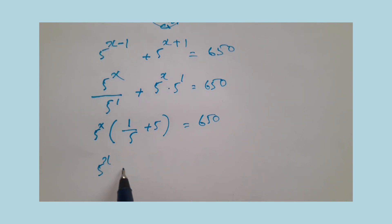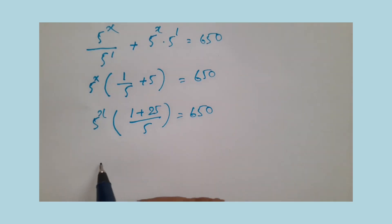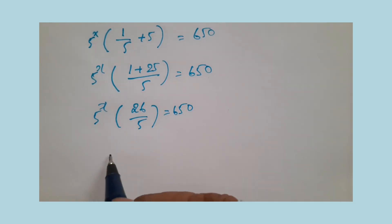Take the LCM: 5 power x times (1 plus 25 over 5) equals 650. So 5 power x times 26 over 5 equals 650.